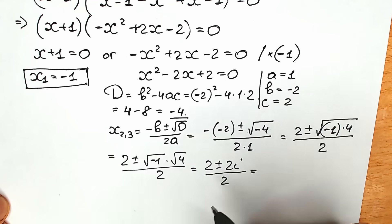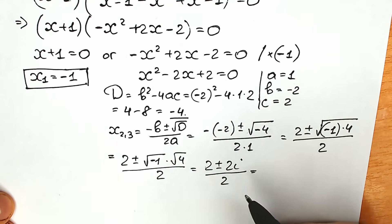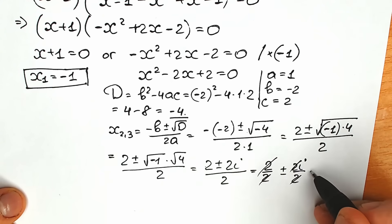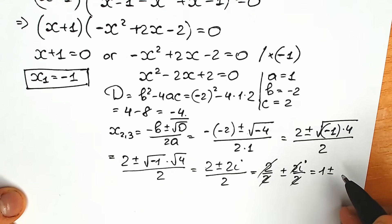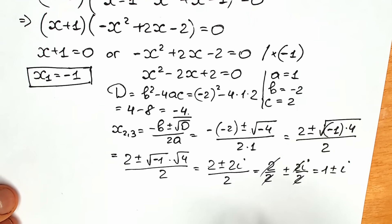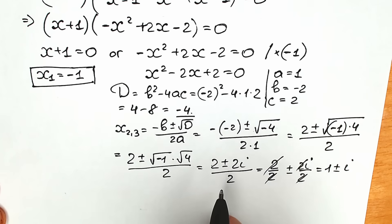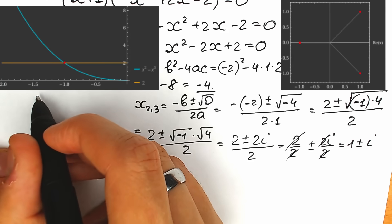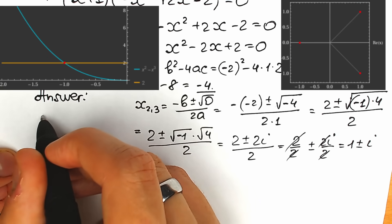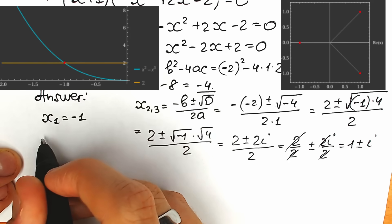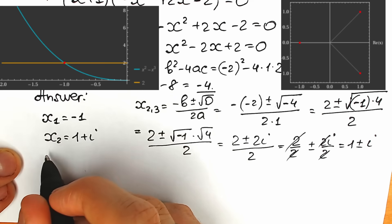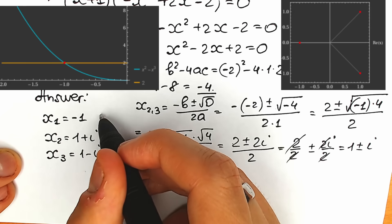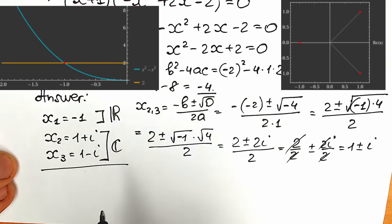Dividing numerator by 2 — splitting into real and imaginary parts: 2/2 ± 2i/2 — we cancel the 2s and get 1 ± i. So our final answers are: x₁ equals minus 1, x₂ equals 1 plus i, and x₃ equals 1 minus i. The second and third roots are complex roots, and the first is a real number root.